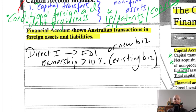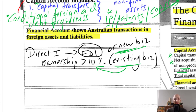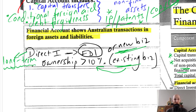Direct investment refers to foreign direct investment (FDI). This occurs when an investor takes a stake of greater than 10% in an existing business, or when an investor creates a wholly new business. It is a long-term investment with a potentially controlling stake, where the investor wants to play a role in decision-making.